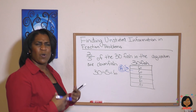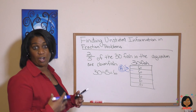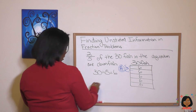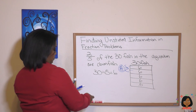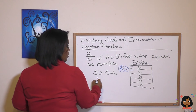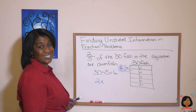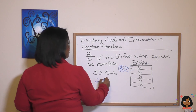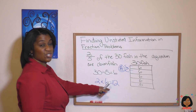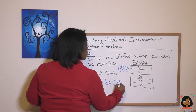Then they asked: how many actual fish are clownfish? Well, if I've got two parts, and each part has six fish in it, that means two times six is 12 fish are clownfish.